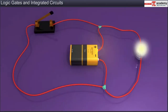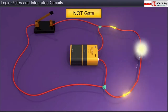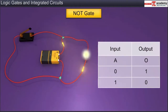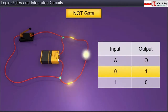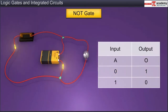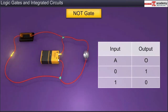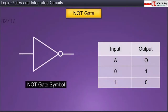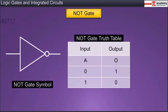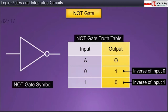Here is a circuit representing a NOT gate. Unlike the AND and OR gates, a NOT gate has only one input represented by switch A. When switch A is open, no current flows from it, so the input is zero; however, the bulb is turned on, hence the output is one. When switch A is closed, assuming zero resistance in the switch, all current flows through the switch and no current flows through the bulb; thus input is one and output is zero. The symbol and truth table of a NOT gate are shown here. From the truth table we can see that a NOT gate inverts the input, thus it is also called an inverter gate.